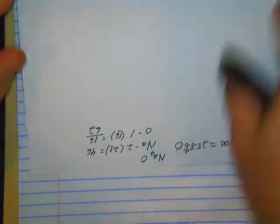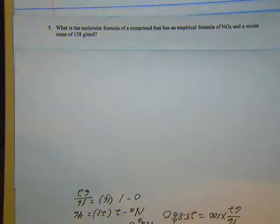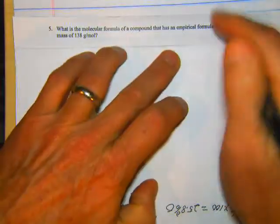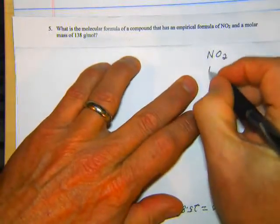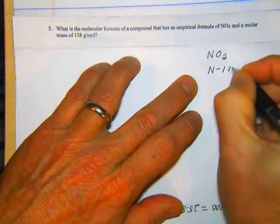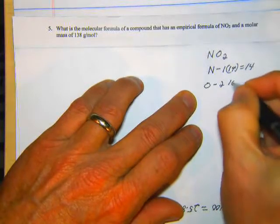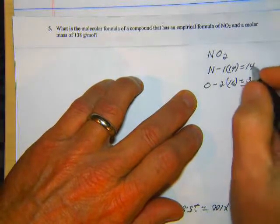Let's look at problem number five. What is the molecular formula of a compound that has an empirical formula of NO₂ and a molar mass of 138 grams? We have the empirical formula NO₂, so let's find the empirical mass. Nitrogen: one at 14, that's 14. Oxygen: two at 16, that's 32. And 14 plus 32 is 46.